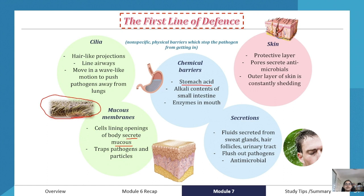Last but not least, the skin itself is a protective layer. What we have underneath is called the true skin — the epidermis — which is the actual skin. The outer layer acts as a protective barrier, and the pores in our skin secrete antimicrobials. The outer layer of skin is also constantly shedding, which helps get rid of any pathogens on the surface.